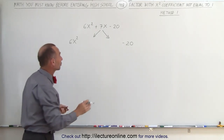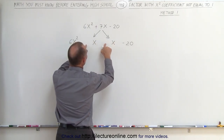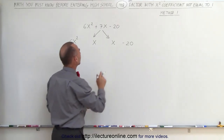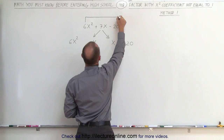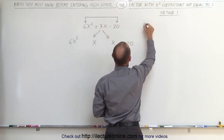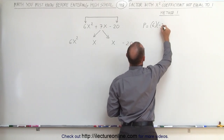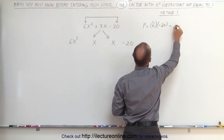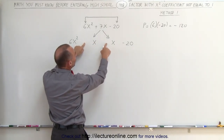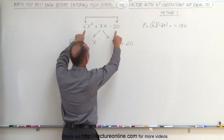We just don't know what those two numerical coefficients are. So we're going to put an x and an x there, but we don't know yet what's going to go in front of those x's — two numbers. The way to determine those two numbers is to realize that if you take this 6 and this 20 and multiply them together, the product is equal to 6 times minus 20, which is equal to minus 120. Whatever these two numbers are, their product should be minus 120.